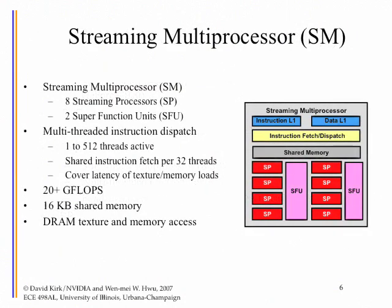Let's go into the Streaming Multiprocessor in more detail. The SM is organized into two symmetrical groups of 4 SPs plus 1 SFU (Special Function Unit) each. Each SP has a closely associated register file bank, and there is an all-points-to-all-points interconnect between them so data in one register file can be routed quickly to another SP.